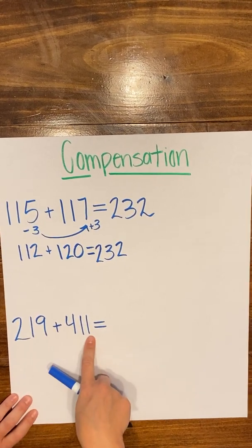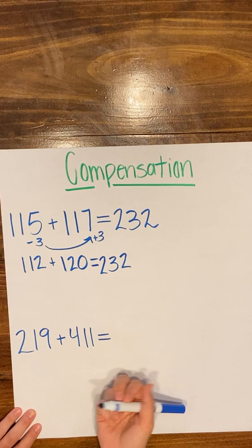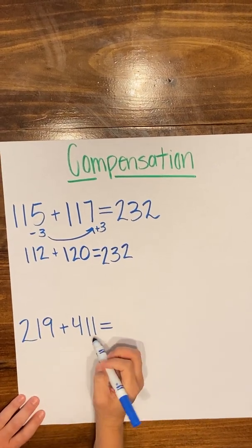So this time, I'm going to take some from my second addend and give it to my first. And to get up to 20, I just need to take 1.